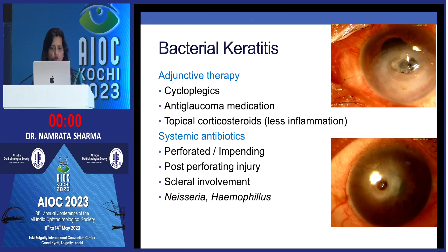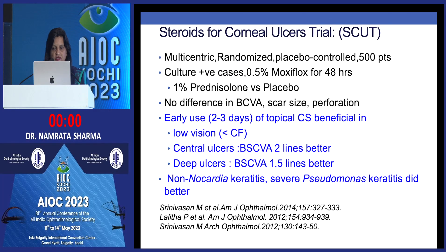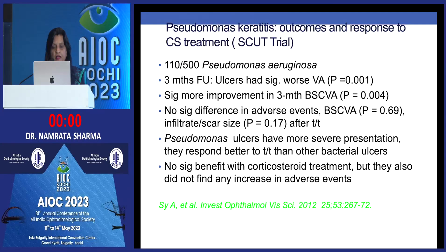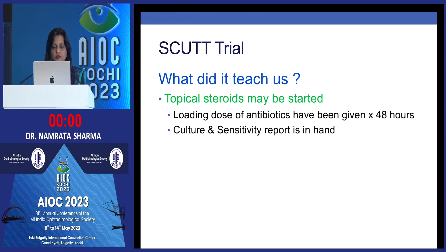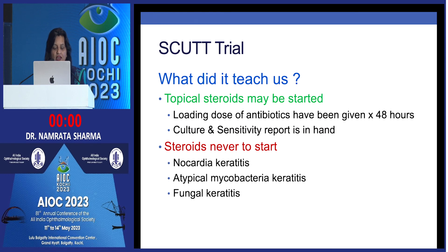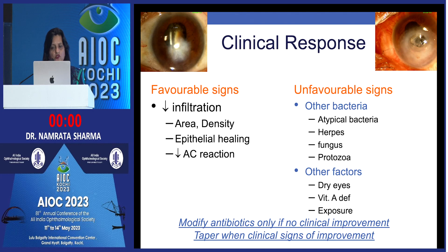Adjunctive therapy includes cycloplegics and anti-glaucoma medications. Systemic antibiotics are classically indicated for perforations, scleral involvement, Neisseria, and Haemophilus. The SCUT trial from Aravind Eye Hospital clearly showed that non-Nocardia keratitis and severe Pseudomonas keratitis did better with topical steroids. The lesson: topical steroids may be started if you have a culture and sensitivity report and have given loading-dose antibiotics for 48 hours — but should never be started for fungal, atypical mycobacterial, or Nocardia keratitis. If the ulcer is healing, continue; if not, look for other bacteria and contributing factors.